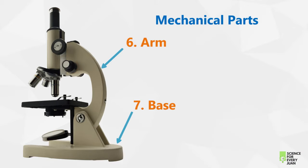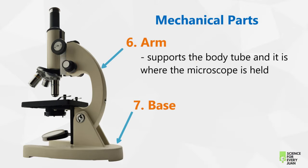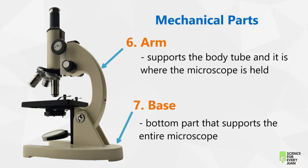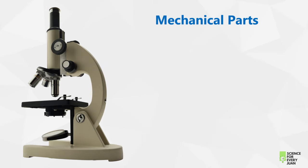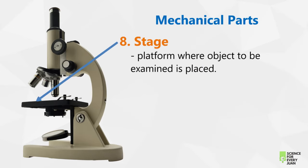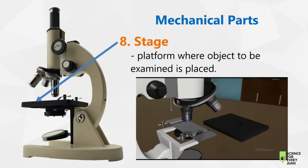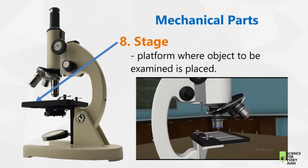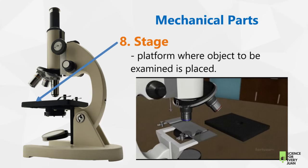The next one is the arm. The arm supports the body tube and it is where the microscope is held. The other one is the base — the bottom part that supports the entire microscope. These two parts are very important in handling the microscope properly. The next one is the stage, which refers to the platform where the object to be examined is placed. This is where you put the slide for observation under the microscope.